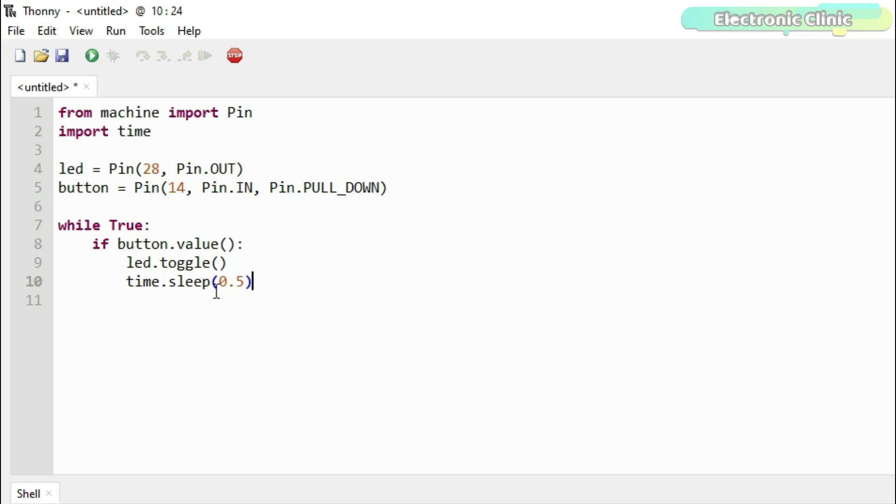The rest of the code is pretty straightforward. If a button click is detected, then simply toggle the LED. Means if the LED is off, then turn it on, or if the LED is on, then turn it off.